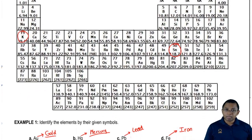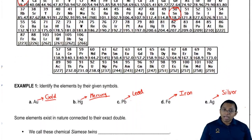Memorize the first 36 elements, then memorize these ones that we just did and then memorize Sn, which is tin.